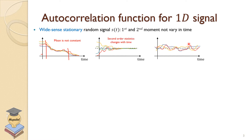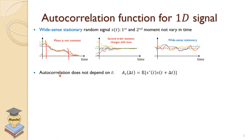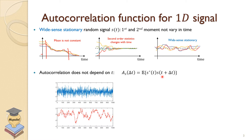Similarly, the second process — although the mean is roughly constant — the second-order statistics, which measure how things change with respect to each other, are not the same: there is lots of variation, then the variance becomes much less. The third one seems to be a good example of WSS. To prove this we need a large number of samples. For WSS processes, the autocorrelation depends only on the time difference delta-t, not on absolute time.